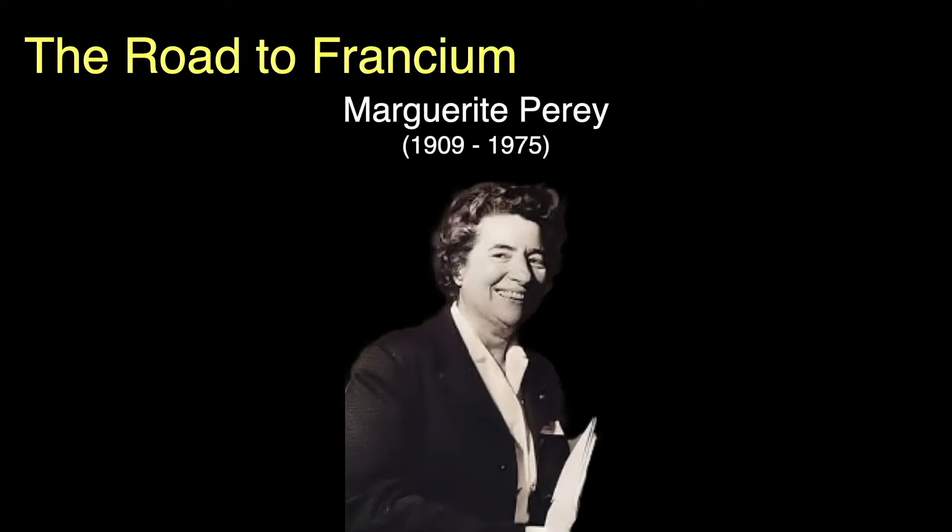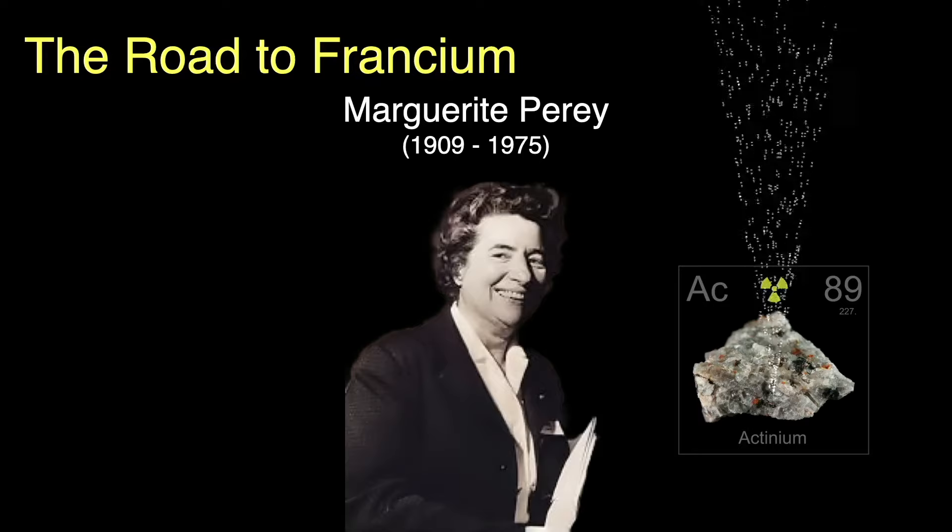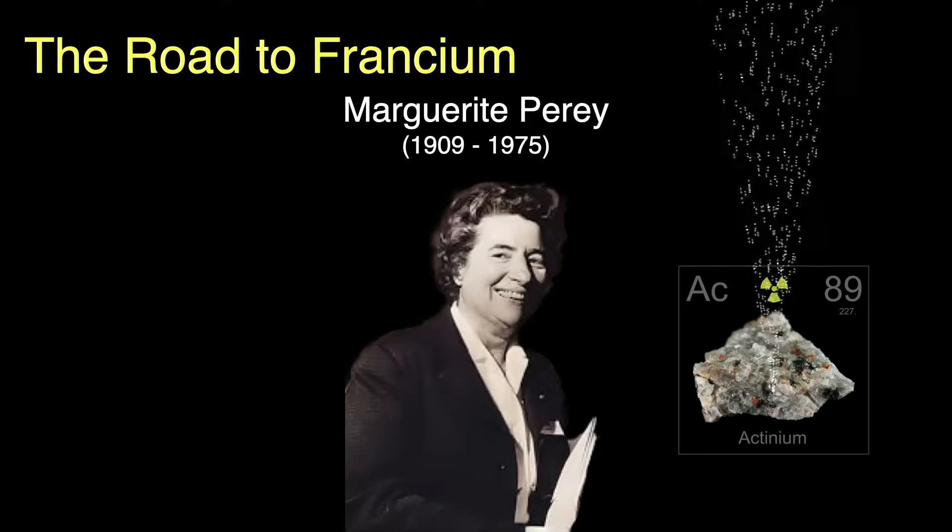Marguerite Perey. She turned out to be a brilliant and careful researcher who worked at the famous Curie Institute in Paris. In 1939, she purified a sample of actinium-227 left over from the Curie's work with radium. She noticed particles being emitted of a much lower energy than expected from actinium.